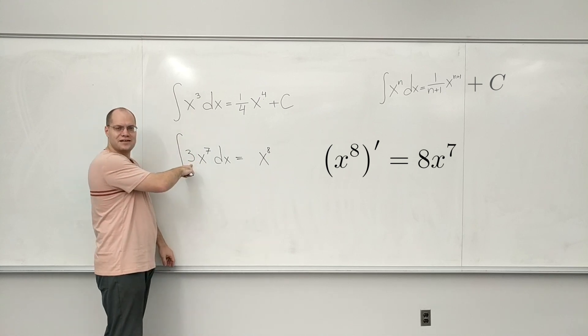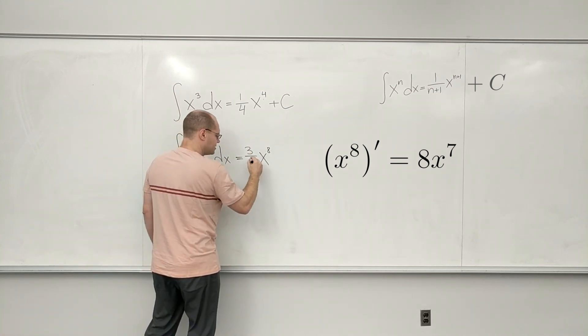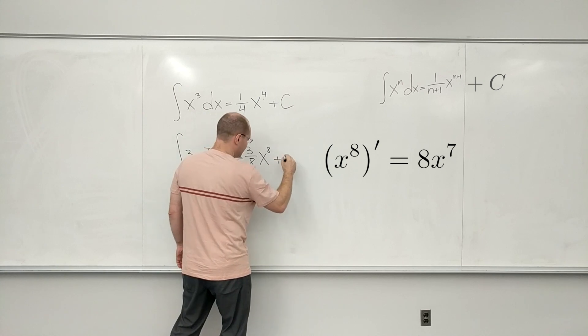And then, of course, there's a factor of 3 that's just there. So it becomes 3/8ths. 3/8ths x to the 8th plus a constant.